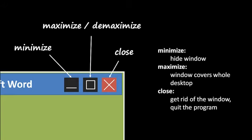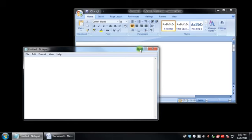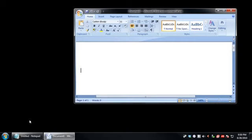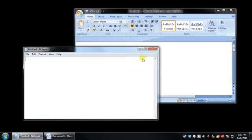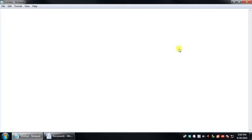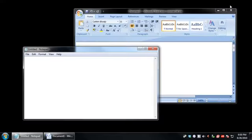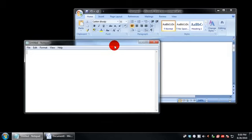The maximize button puts the window into a special state where it covers the whole desktop area and is on top of all the other windows. To get it out of that state so that it's a resizable and movable window again, you click the same middle button to demaximize it. To minimize a window means to hide the window, such that the only way to get it back is to click on its button on the taskbar. So you click minimize, the window goes away; go to the taskbar and click its button, and it reappears.